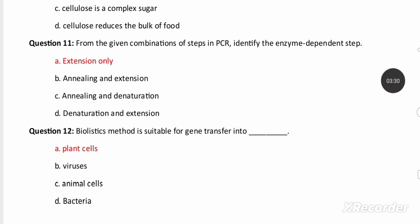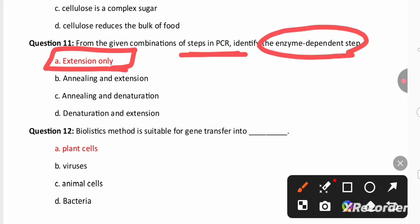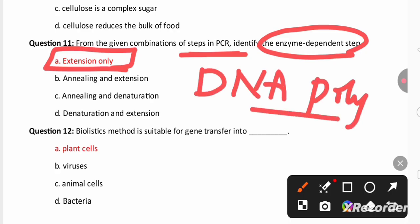In the next question we can find that biotechnology question. From the given combination of steps, usually PCR polymerase chain reaction has three steps: denaturation, annealing and extension. Among the three steps the enzyme dependent step is extension where there is a use of DNA polymerase enzyme and this enzyme is thermostable and it is extracted from thermostable bacteria called Thermus aquaticus.